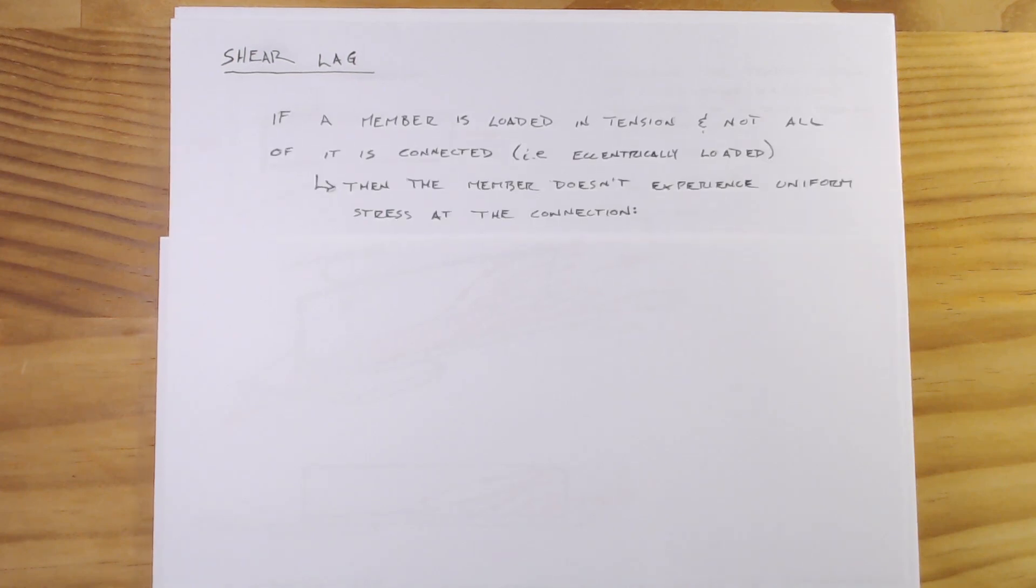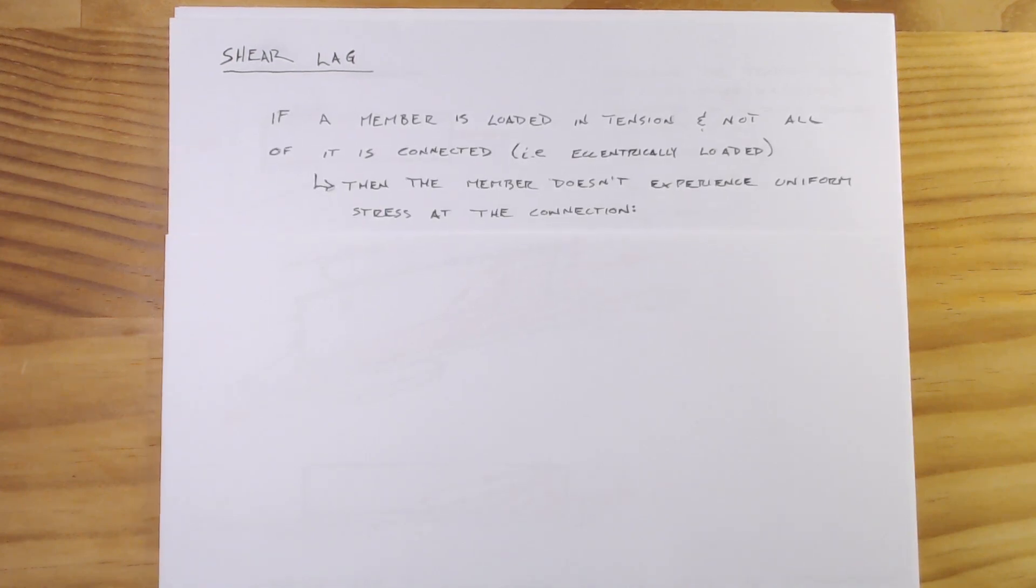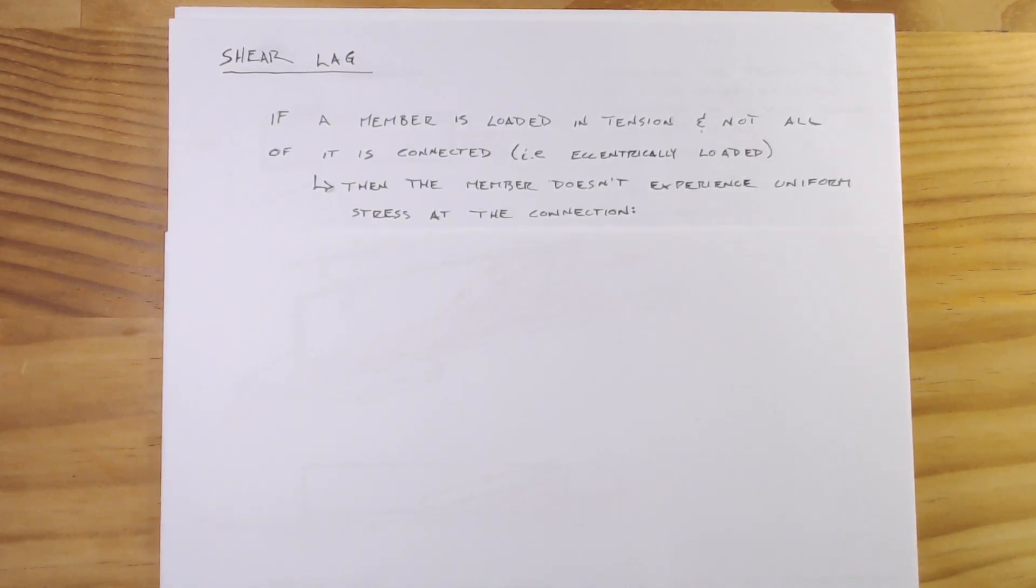When we're trying to determine if the member we're designing is going to fail at the net section due to rupture, there was this kte factor which came up and I mentioned that it was due to shear lag. So I figured we'd talk briefly about what is shear lag and how do we account for it when we're doing a design.